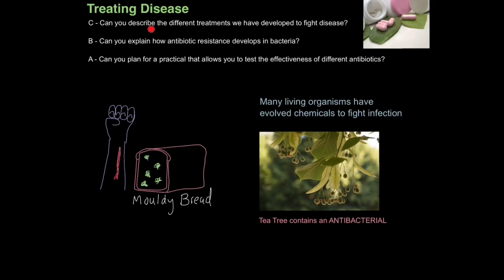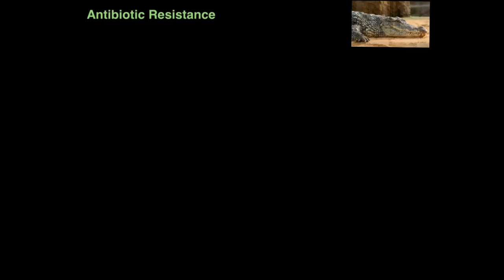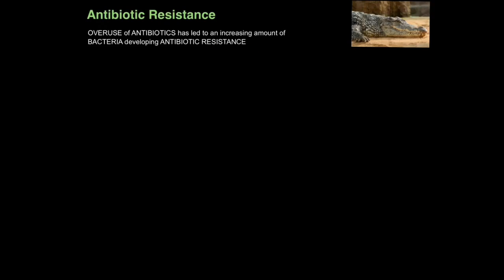So hopefully now you can describe the different treatments we have developed to fight disease. Now let's look at one of the most important parts of this tutorial — a very hot exam topic — which is how bacteria develop antibiotic resistance. Any doctor will tell you that our overuse of antibiotics has led to an increasing amount of bacteria developing antibiotic resistance. We are using way too many antibiotics way too often, and that's fueling the evolution of bacteria to become more resistant.